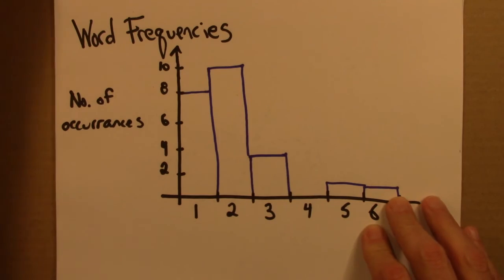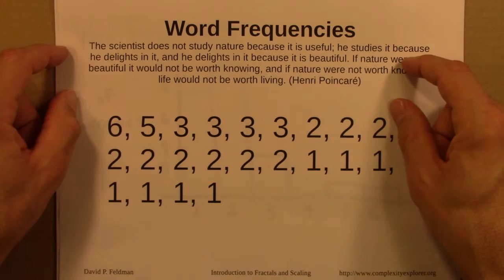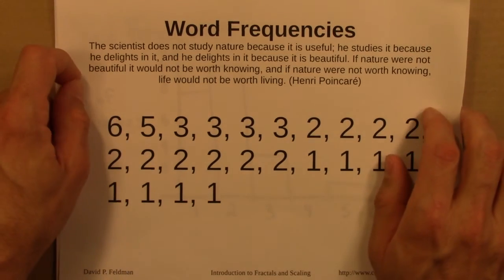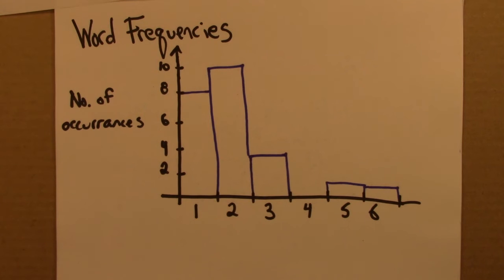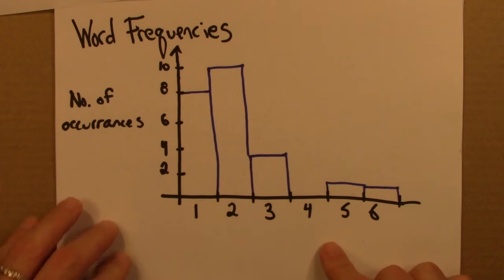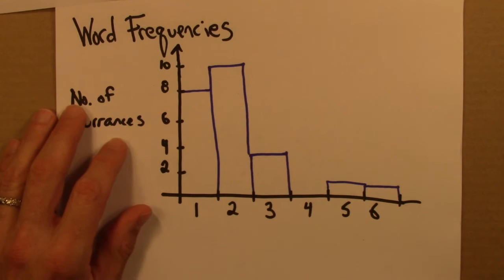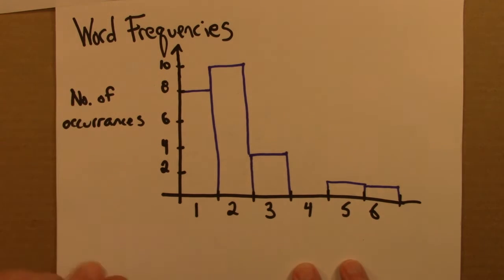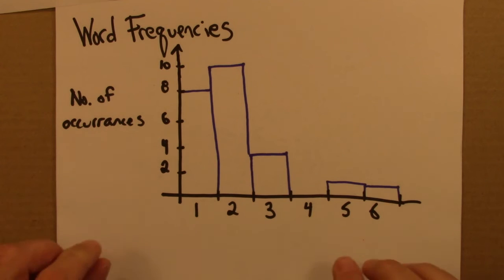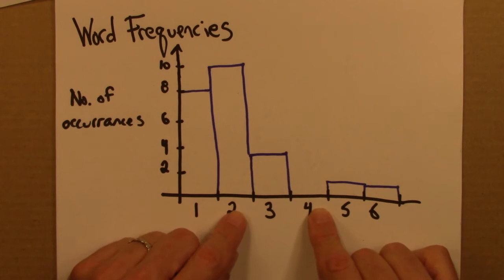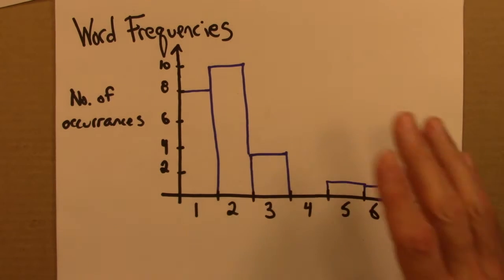What we'll do next is consider word frequencies not for a couple of sentences, but for a much, much longer piece of text. We'll consider the word frequencies from the novel Moby Dick by Herman Melville. The total number of words is about 210,000, and the number of different words is about 18,800. So let's think about what we might expect — are most words going to be used three or four times, or only once or twice?